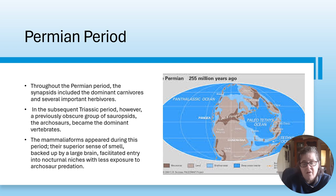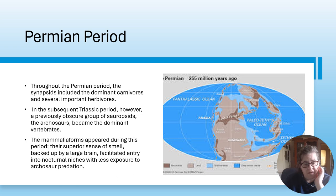The Permian period is about 255 million years ago. Throughout the Permian, the synapsids included the dominant carnivores and several important herbivores. In the subsequent Triassic period, however, a previously obscure group of sauropsids - the archosaurs - became the dominant vertebrates. The mammaliaforms appeared during this period and their superior sense of smell, backed by a larger brain, facilitated entry into nocturnal niches with less exposure to archosaur predation.